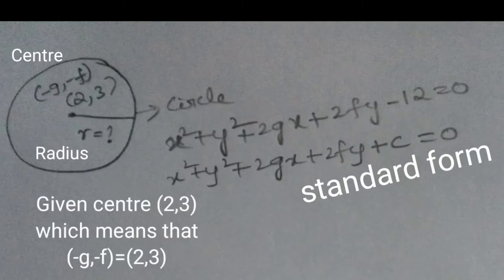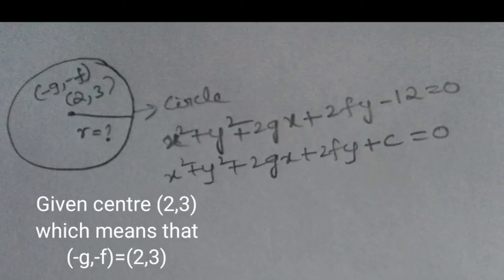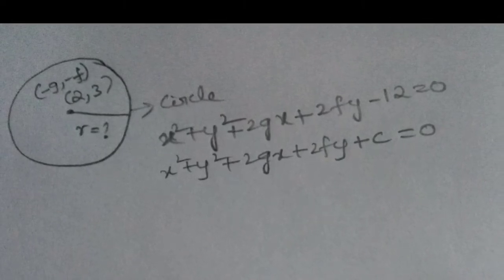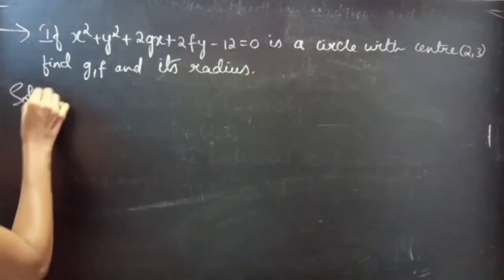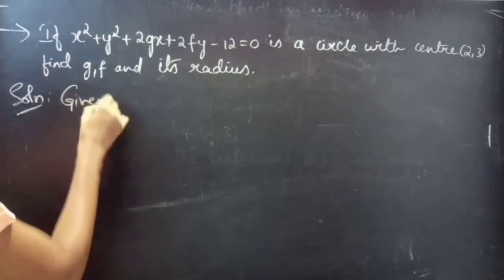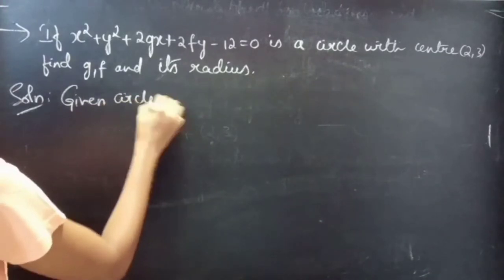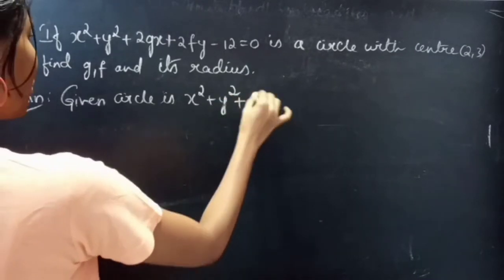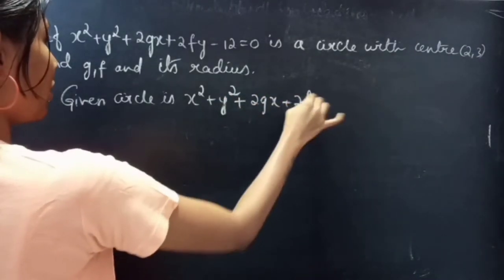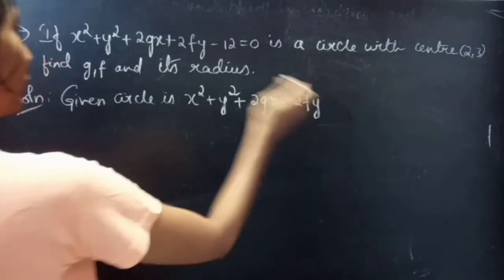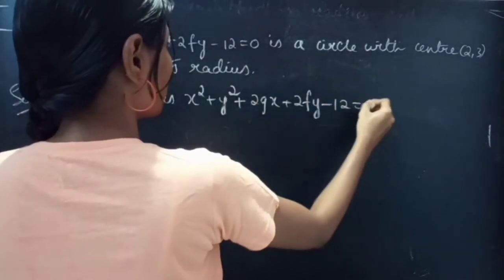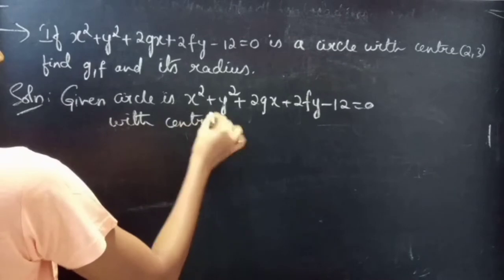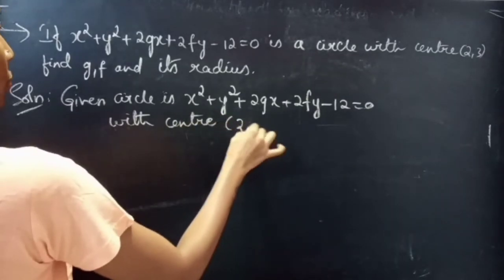Consider a rough figure of the given circle and its center. Here we are asked to find g, f and radius. Solution. Given circle is x squared plus y squared plus 2gx plus 2fy minus 12 equals to 0 with center (2, 3).